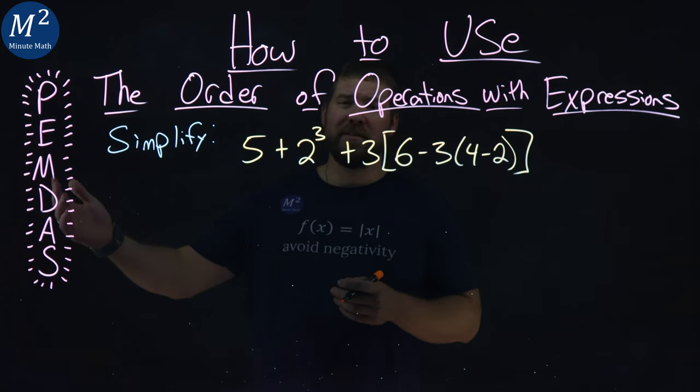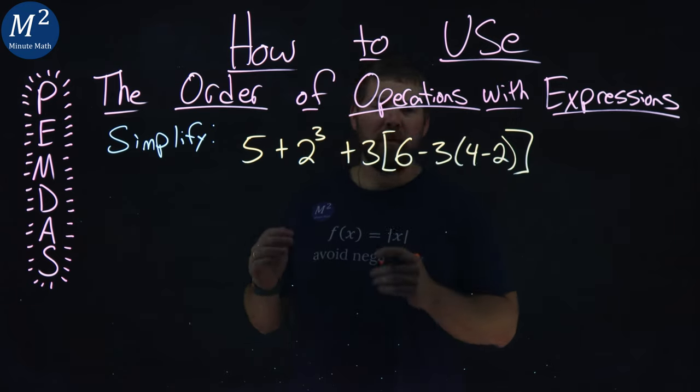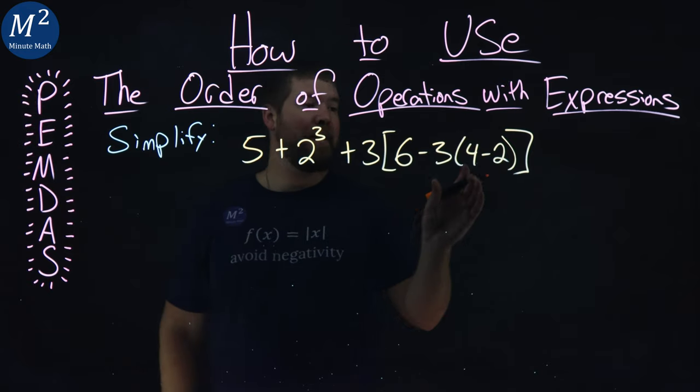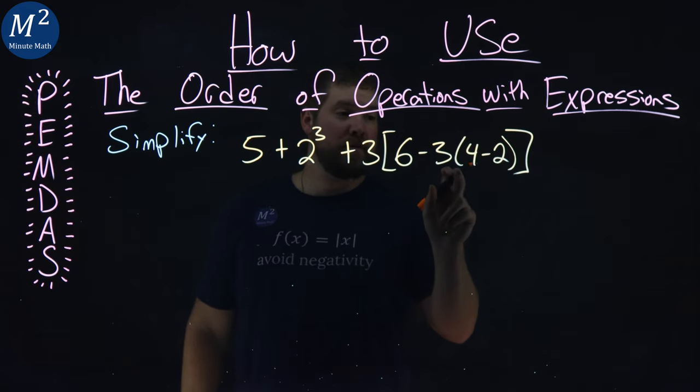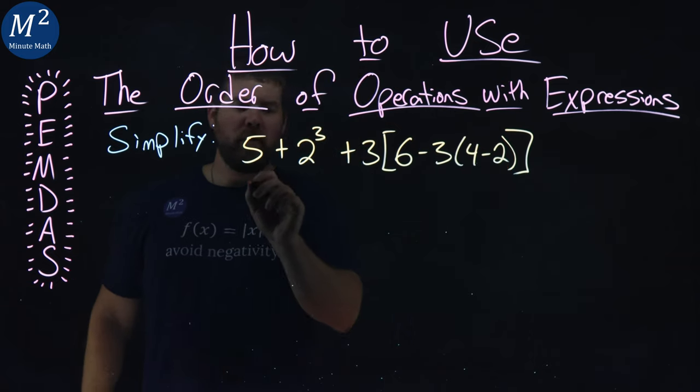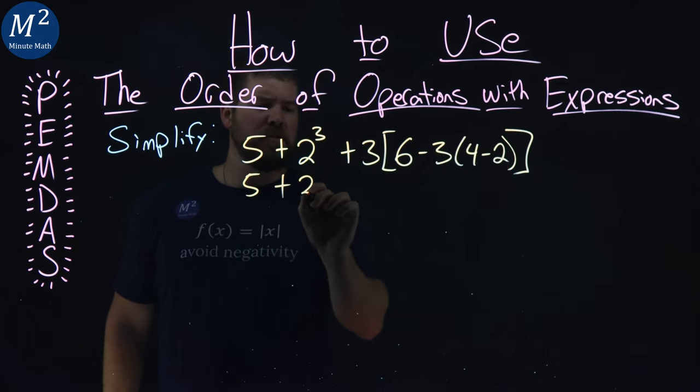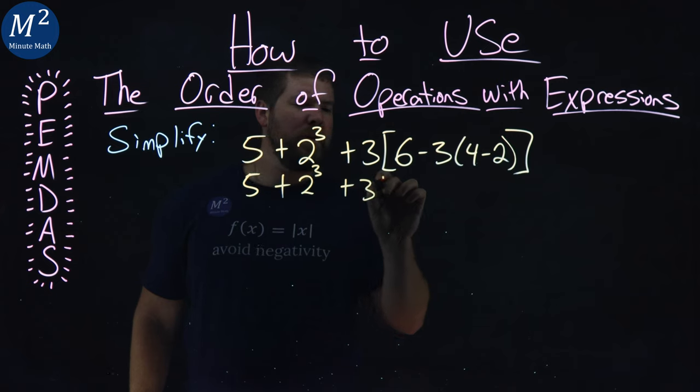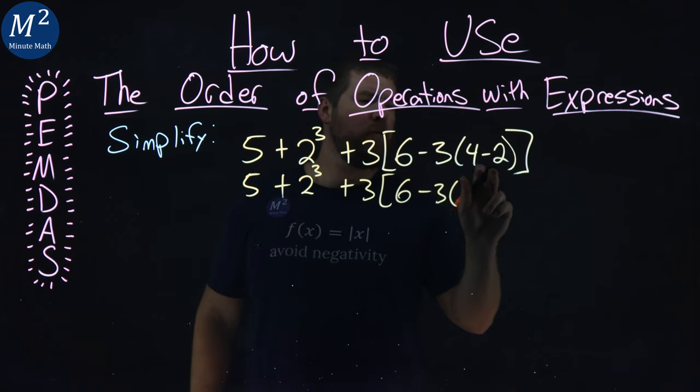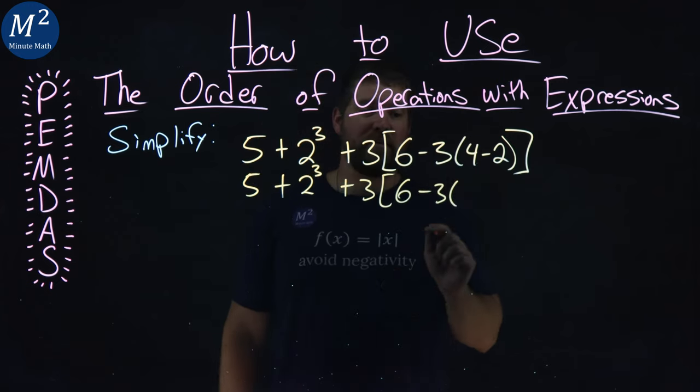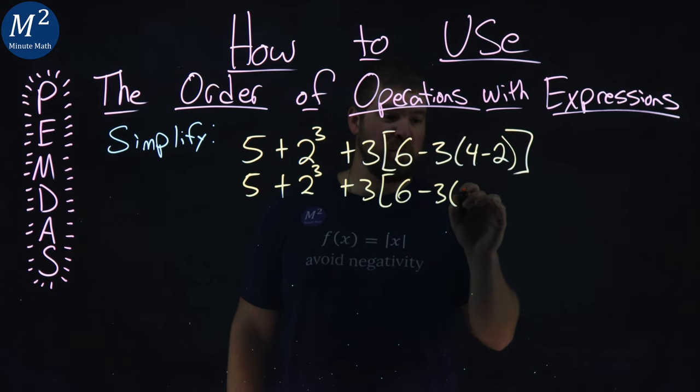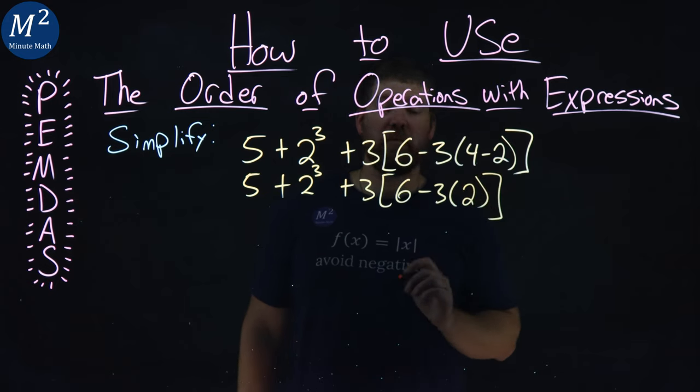We're using PEMDAS here to simplify. PEMDAS first states parentheses, so anything that's in parentheses we have to do first. The only thing I see is 4 minus 2. So everything else I'm going to rewrite: 5 plus 2 to the 3rd plus 3, bracket 6 here, minus 3, and 4 minus 2, well, that's just 2. Pretty easy.